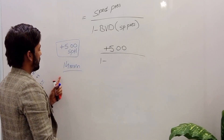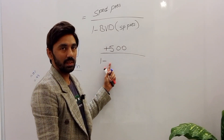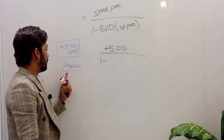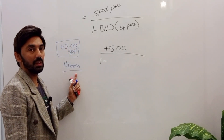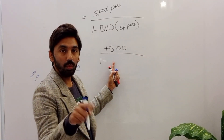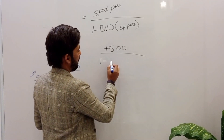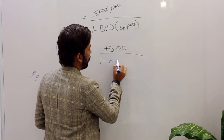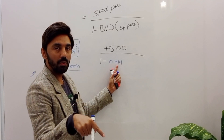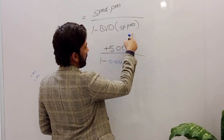Remember, this is important: when you put the back vertex distance value into this formula, the unit must be in meters, not millimeters. Our BVD is 14 millimeters, but when entering it into the formula, we convert it to meters, giving us 0.014. So now we have: plus five divided by one minus 0.014 multiplied by plus five.